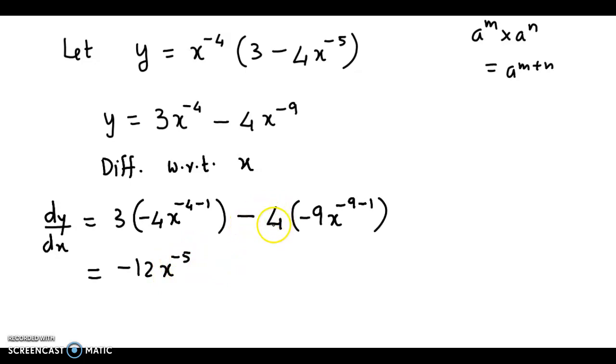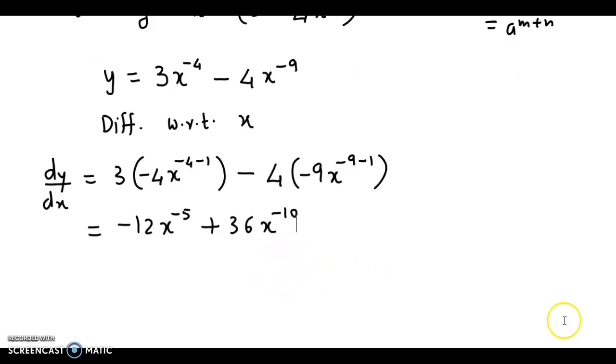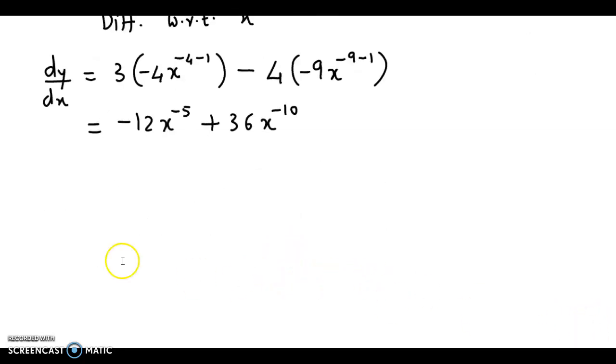And -4 times -9 gives +36x^(-10). Now we can simplify this further.